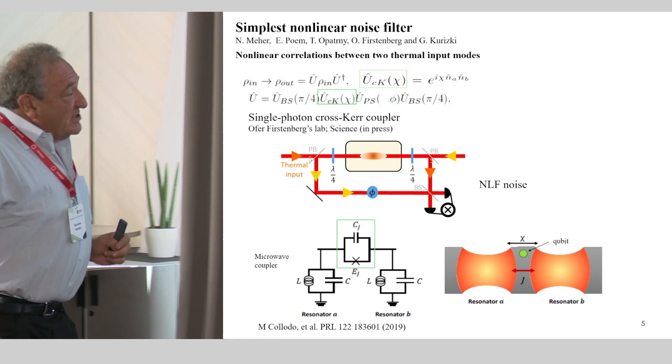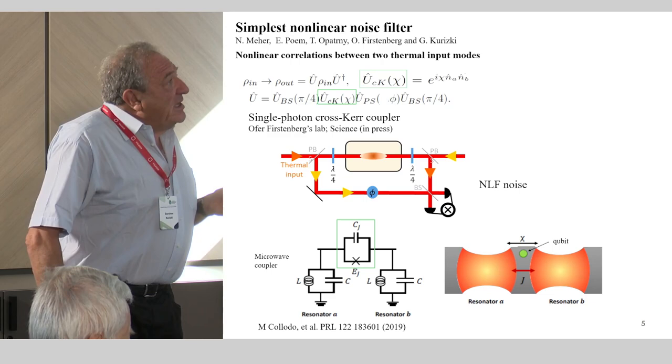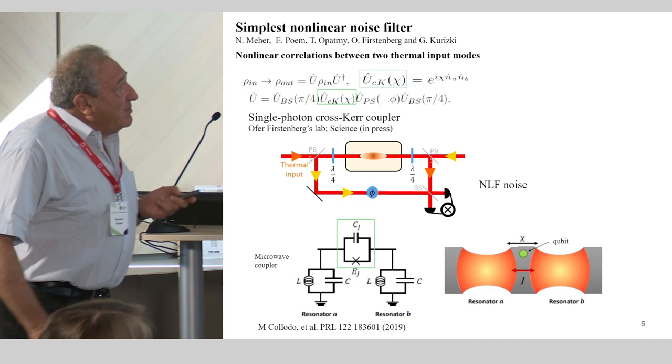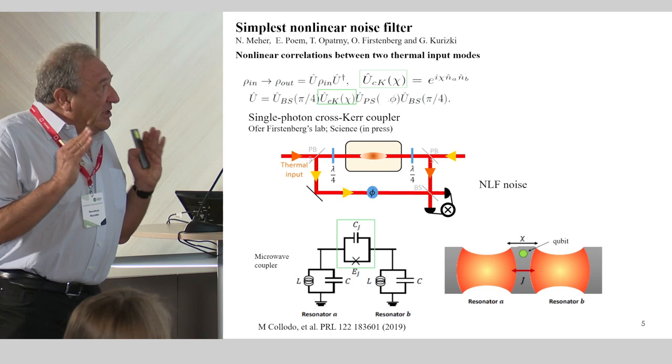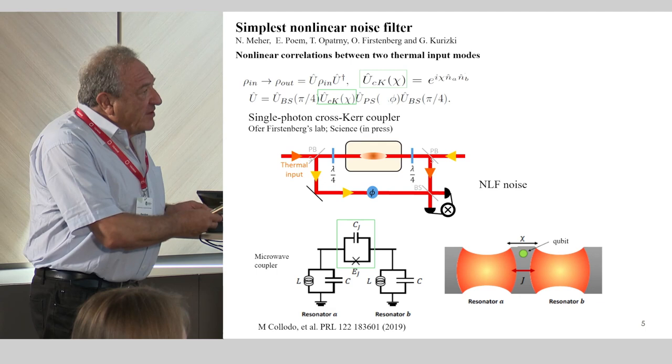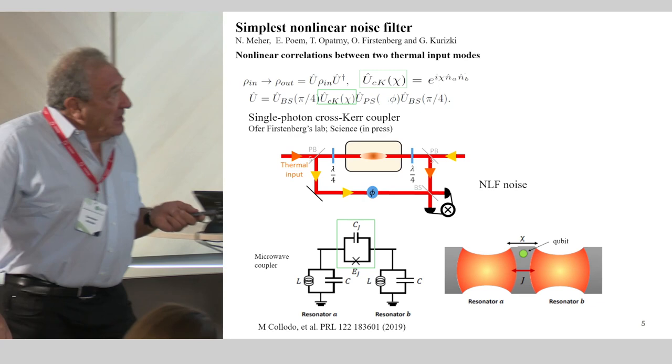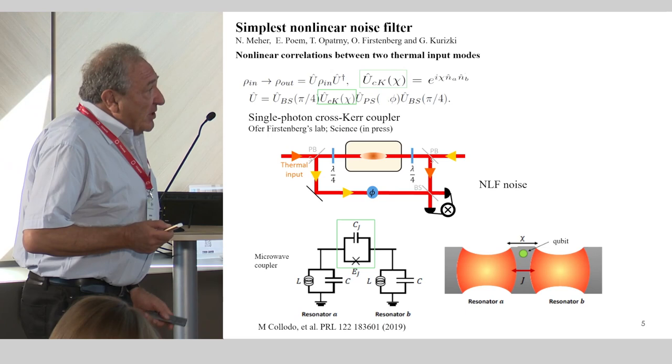That was the idea behind this paper, but it is still technically a long way off. What we would like to do next is to focus on a simpler setup which consists of two modes only, where in the middle of the setup you have a nonlinear coupler such as this cross-Kerr coupler. Firstenberg's setup is now in work, but you could alternatively use the setup of the Malirov's group where two microwave resonators are dispersively coupled by a Josephson qubit. That would do basically the same job. There are ways of doing this now experimentally.